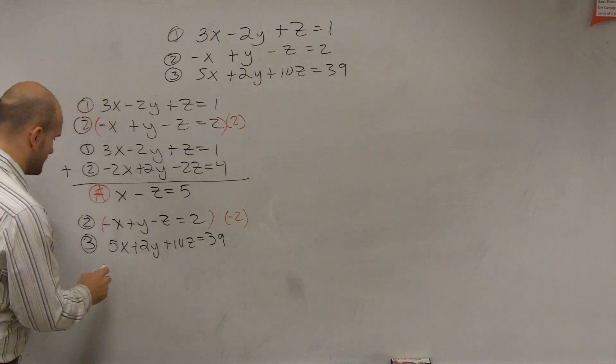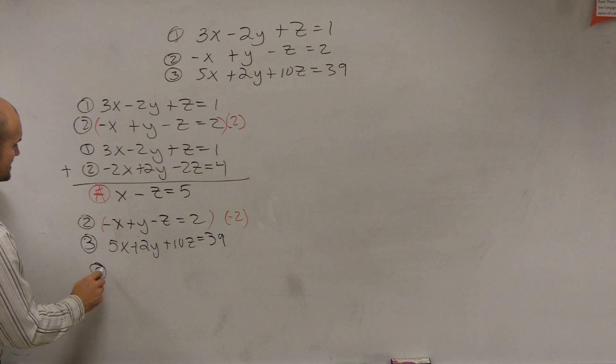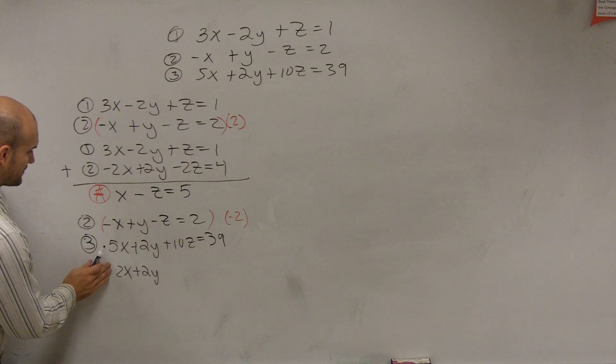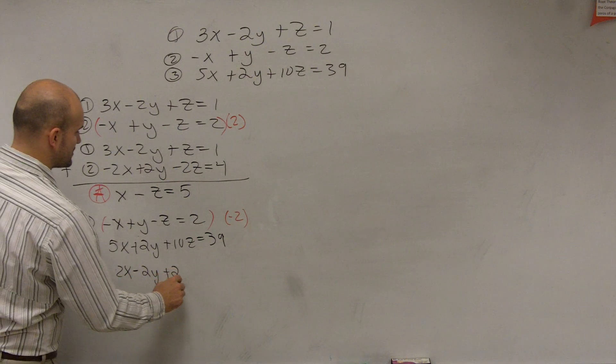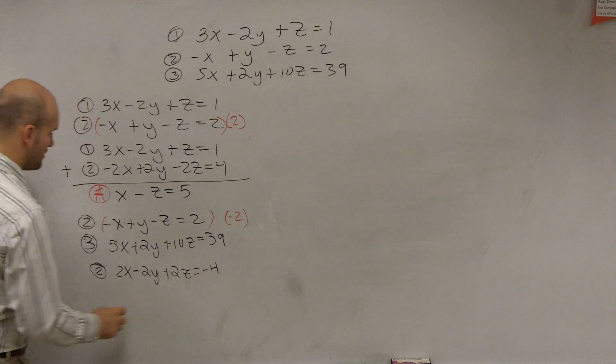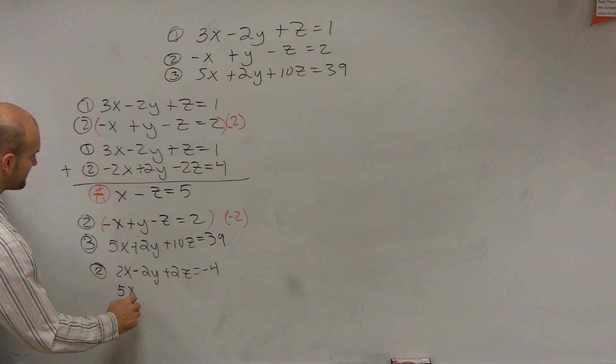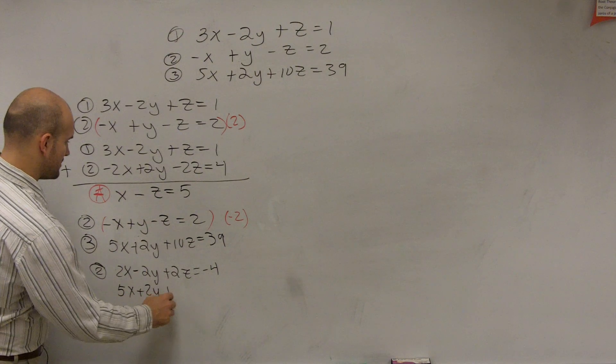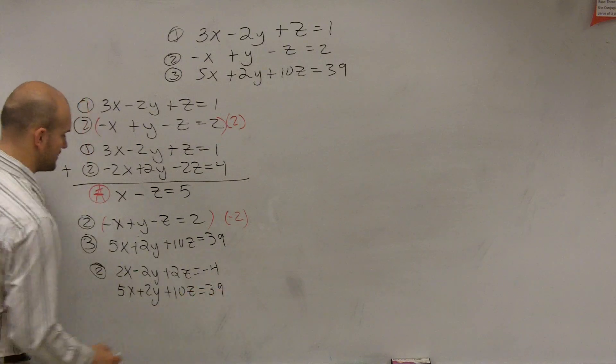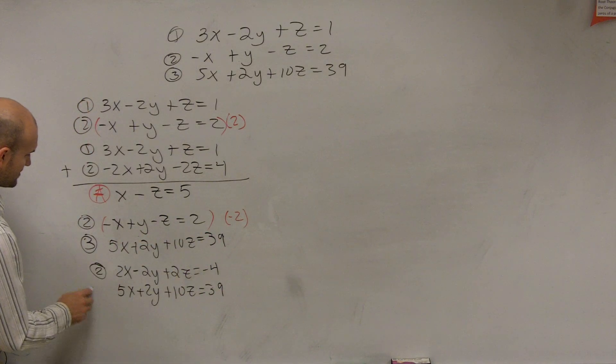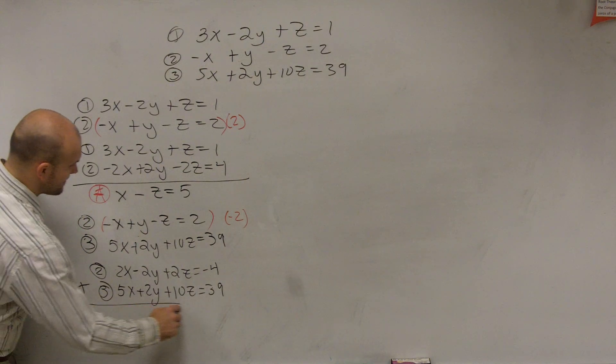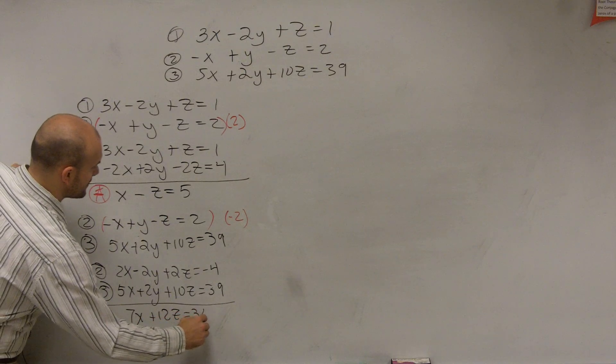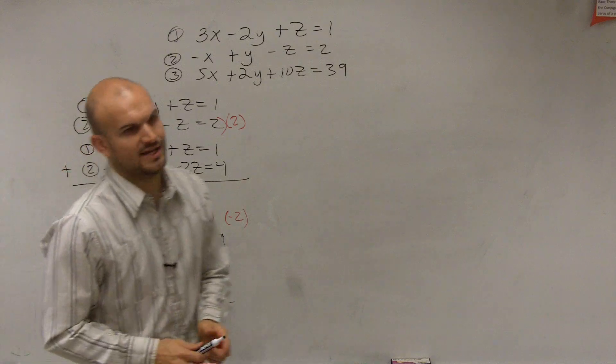So let's go ahead and solve through this. So I get 2x minus 2y plus 2z equals negative 4. And then now 3 is going to be the same. So it's going to be 5x plus 2y plus 10z equals 39. So now when I solve, I add these up. Add them up, and I get 7x plus 12z equals 35. So that's what I call my equation B.